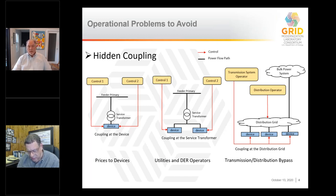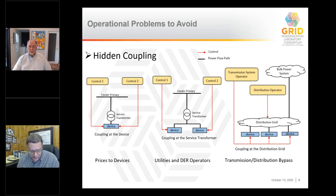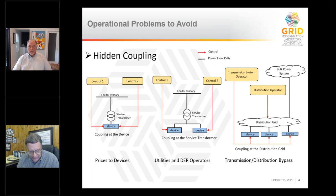The one we're mostly concerned with is a transmission system operator — something like an independent system operator, regional transmission operator, or the equivalent — who is responsible on a large scale but is now managing things connected at the distribution level, while the distribution operator is responsible for distribution operations and reliability. That can cause a hidden coupling through the distribution grid itself, and it may not always be obvious that this is happening. Let's look at the next slide to see why.